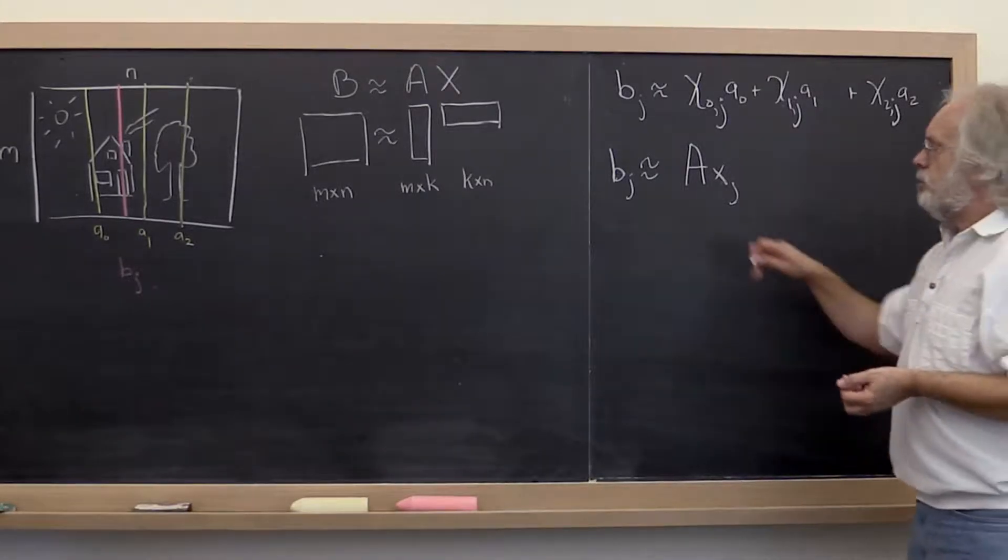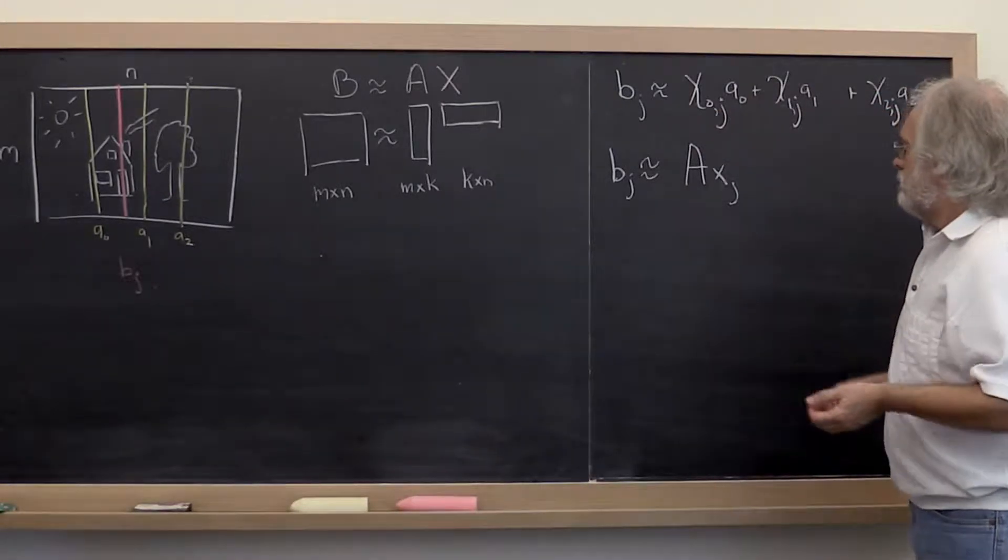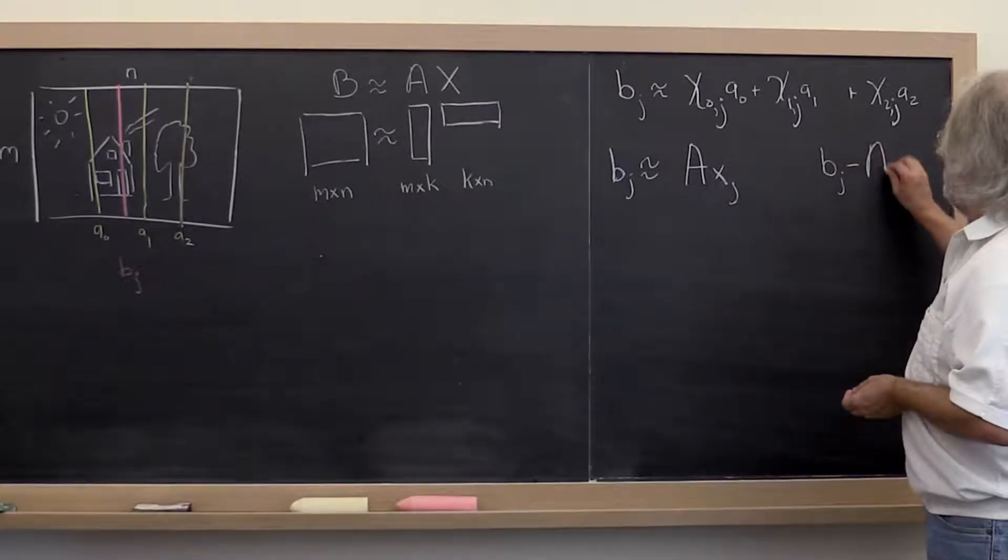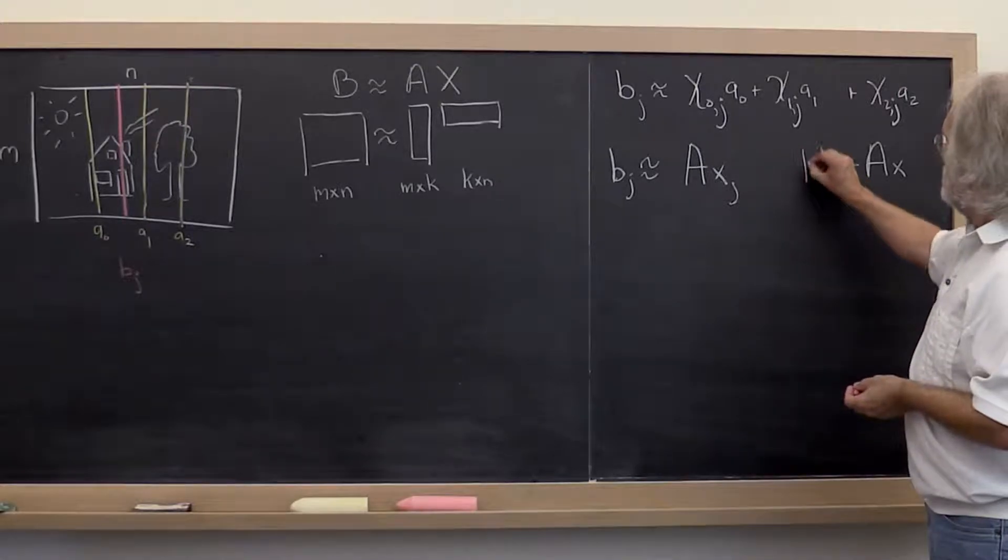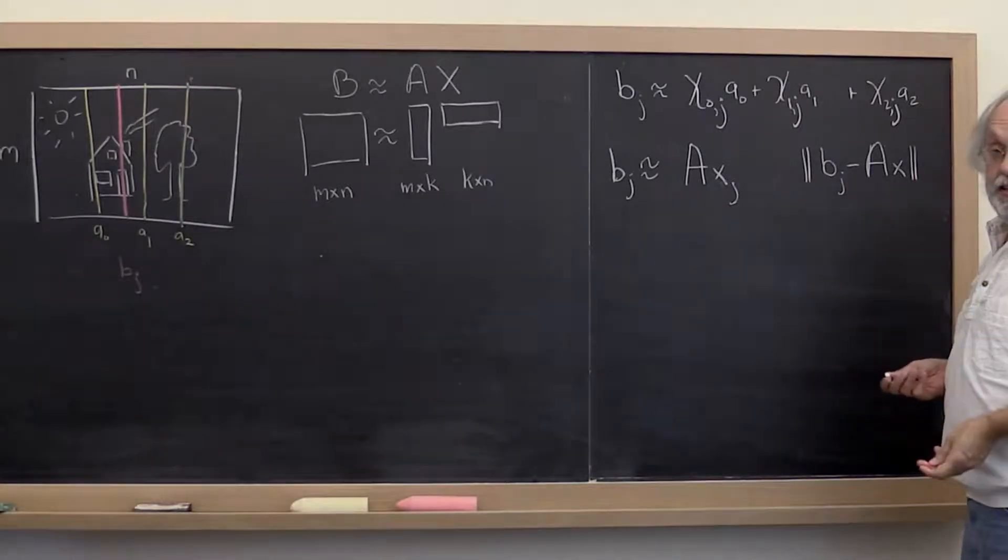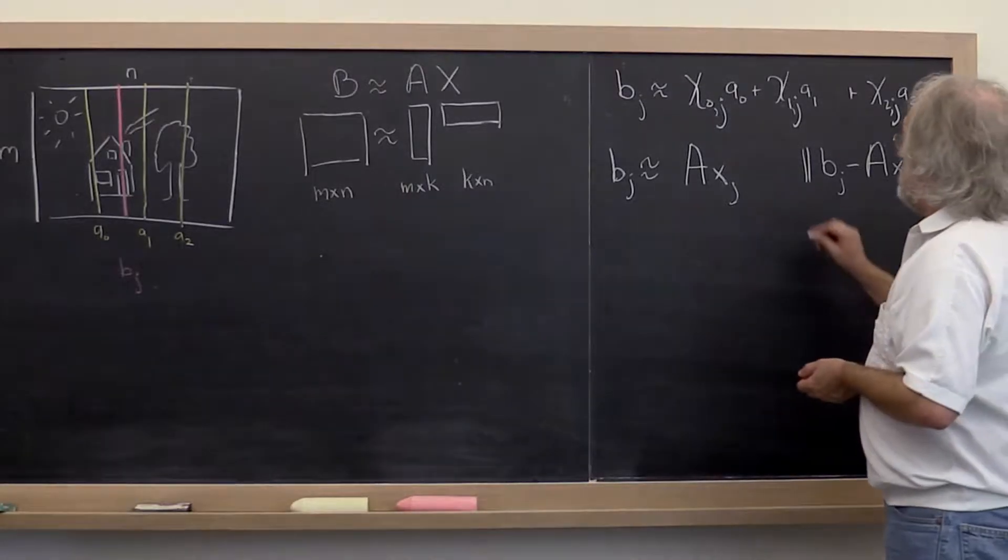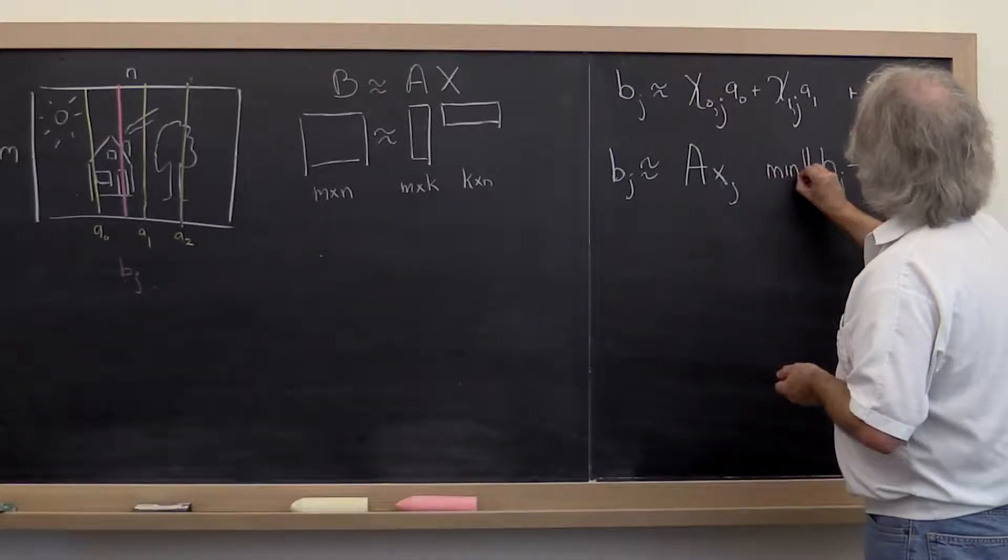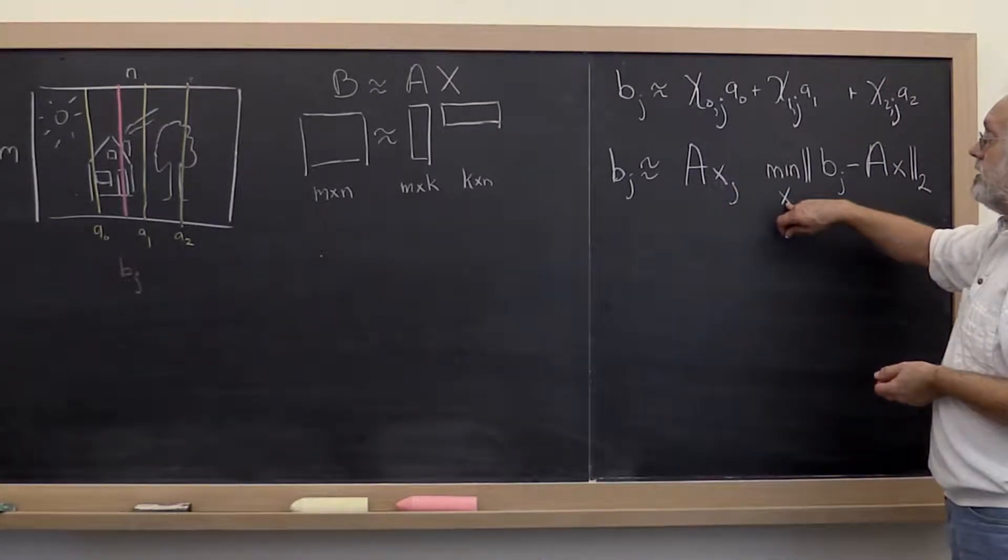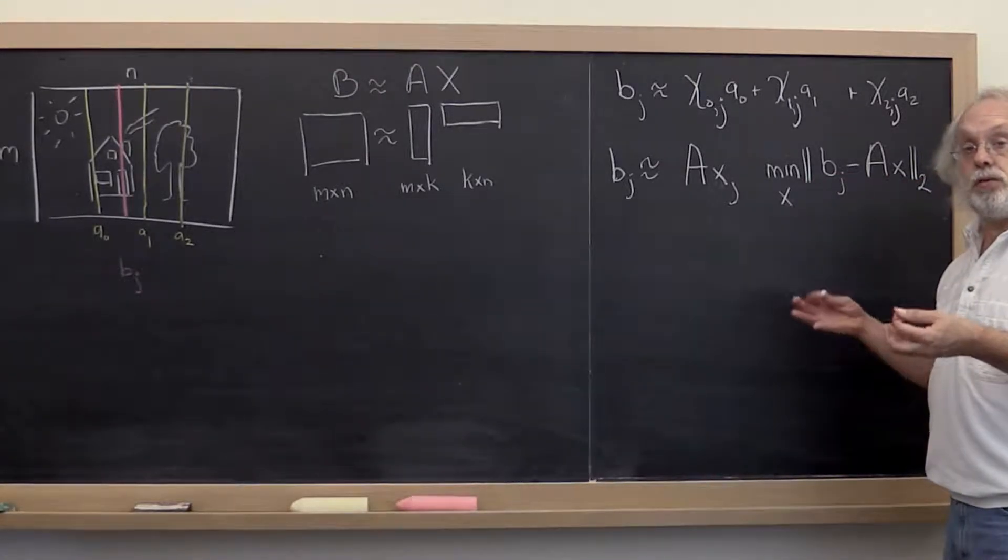Now we would like to pick our Xj to be the best set of such coefficients. What does that mean? We want to look at Bj minus A times X. We want to look at the magnitude of the difference. We can use the two norm for the magnitude. And then we can say minimize that over all possible choices of X and pick your Xj to be the vector X that minimizes all of that. That's known as the linear least squares problem.